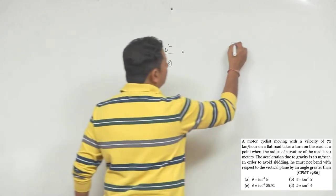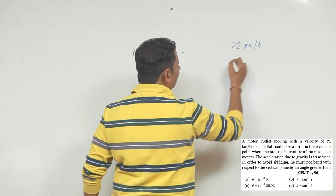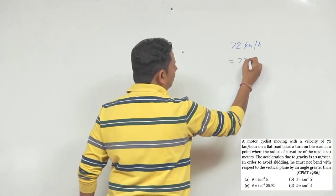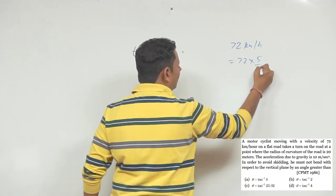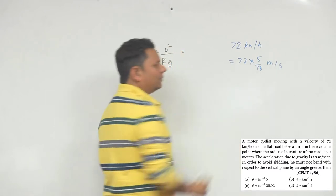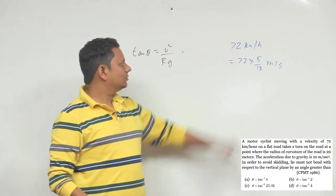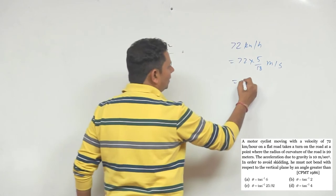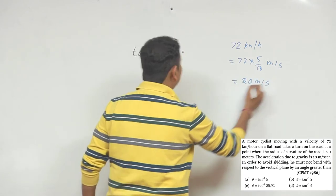So now, 72 km per hour is equal to 72 multiplied by 5/18 meters per second. This is your conversion formula that we know. So now convert it - our velocity is 20 meters per second.